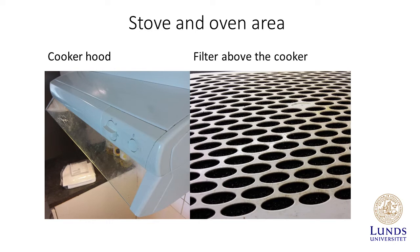The stove and oven area are particularly challenging for all tenants, regardless if you stay in a common area or a studio flat. The cooker hood can become quite greasy, as shown in the picture to the left — there are grease stains on the glass. Use some fat-dissolving detergent to remove this. You might need to do this several times if there is a lot of fat gathered here.